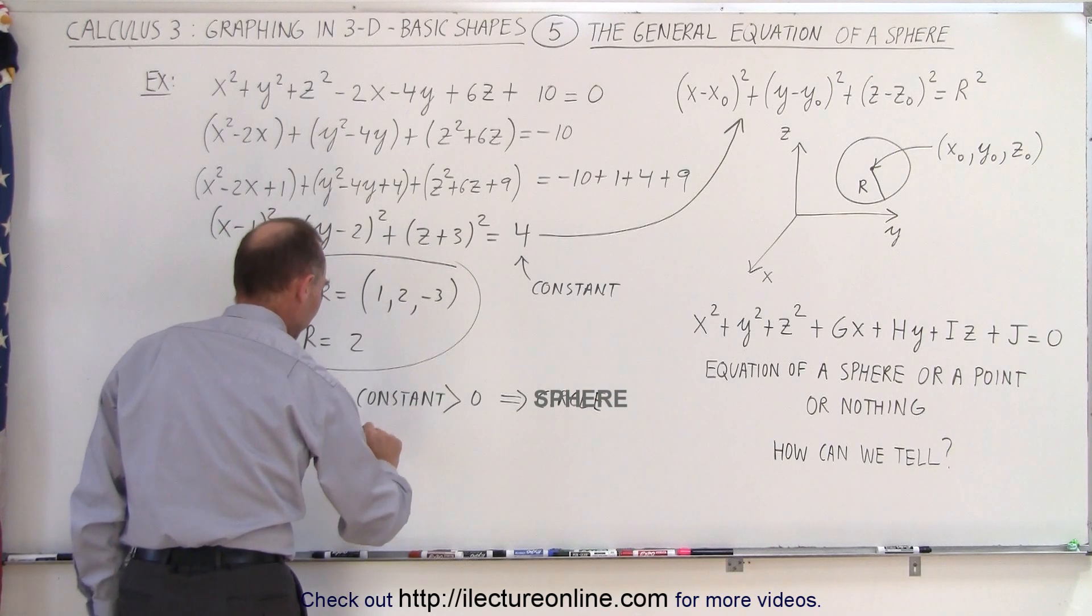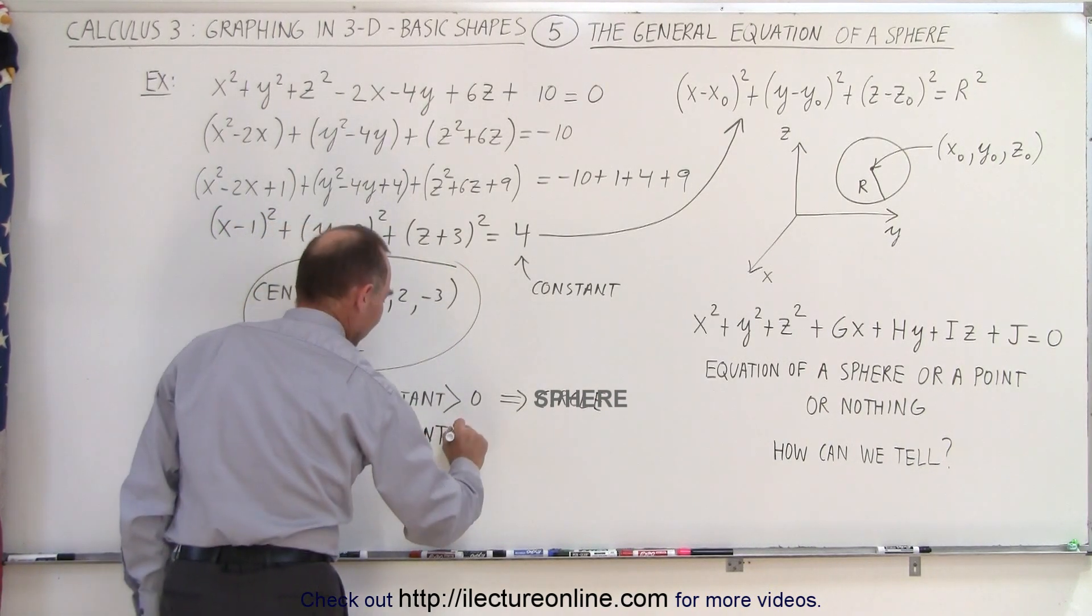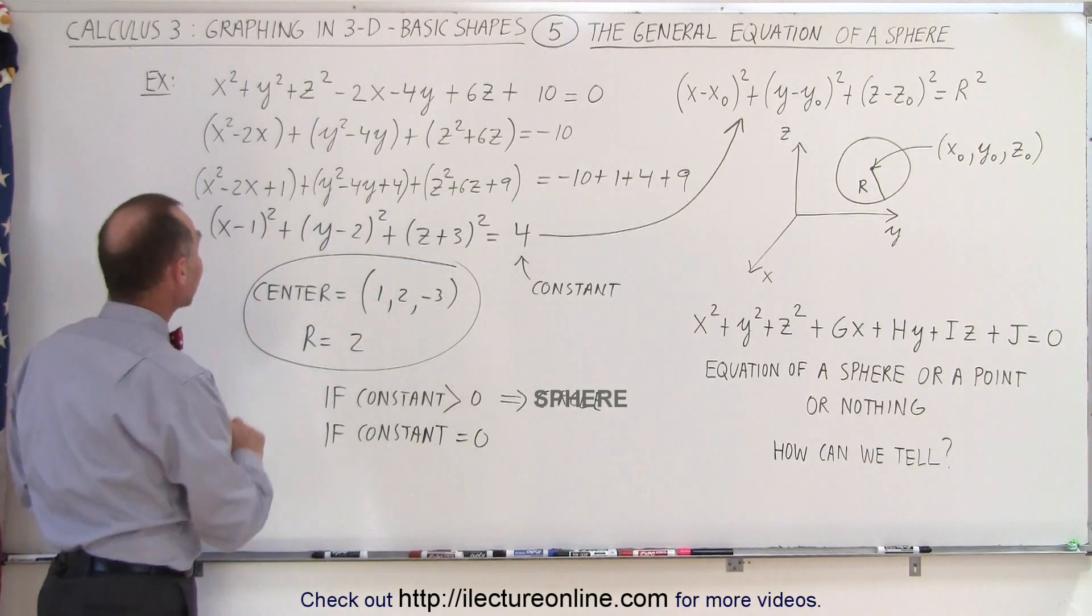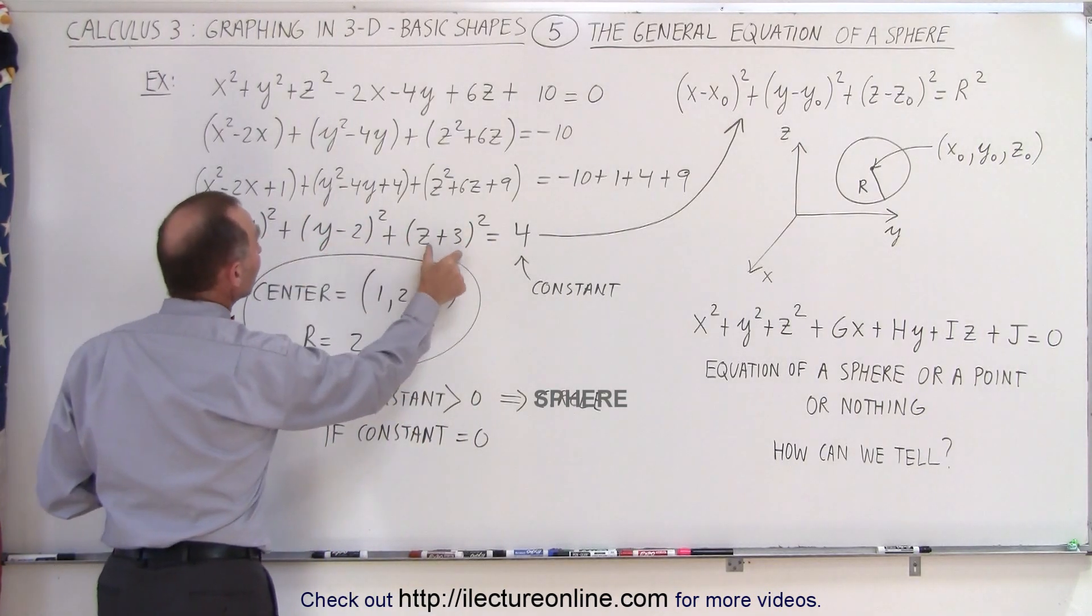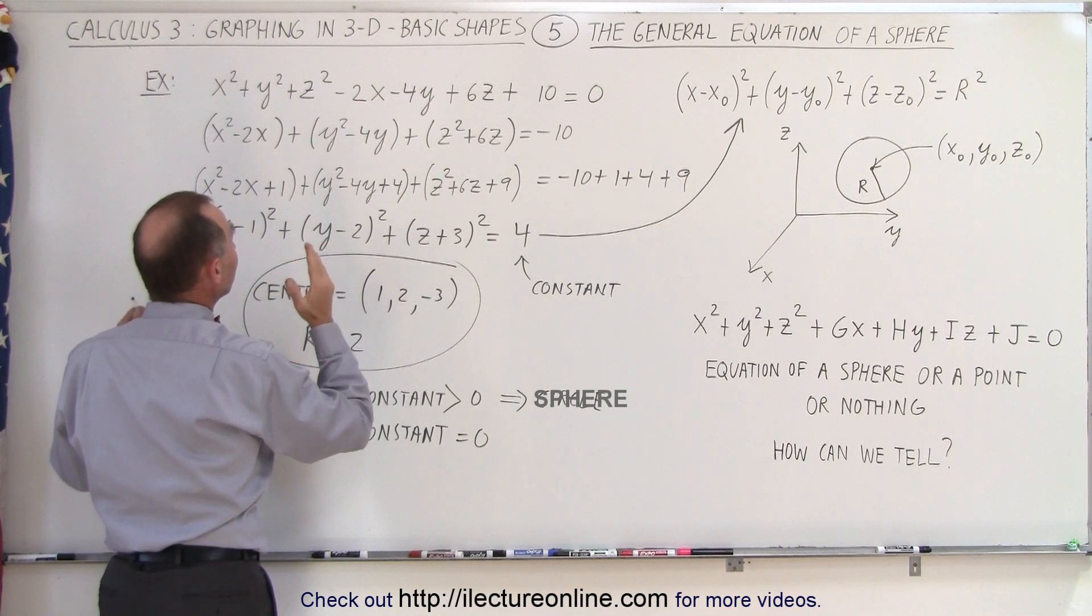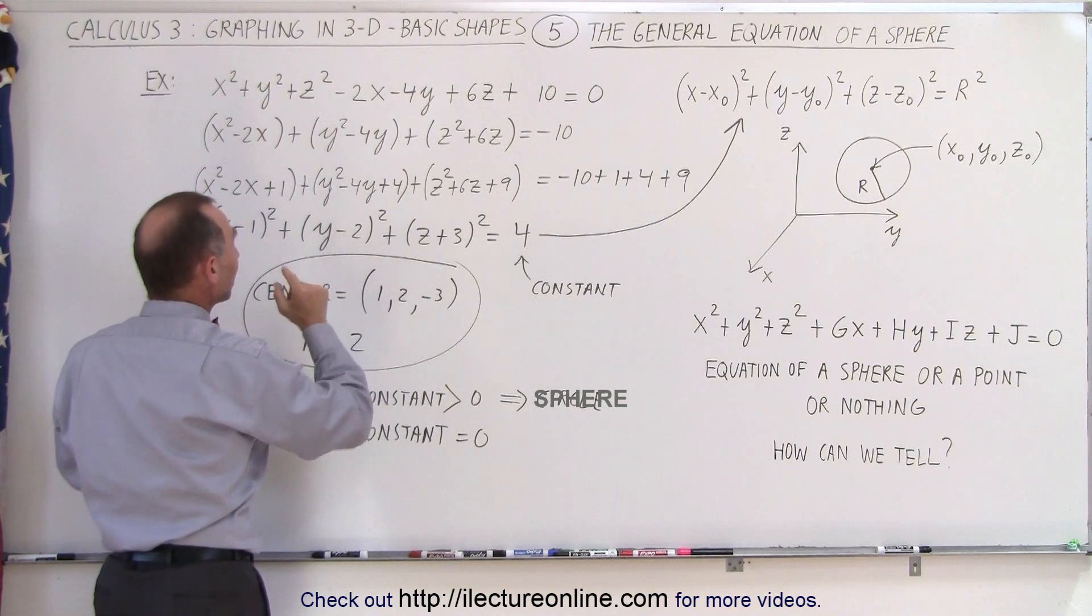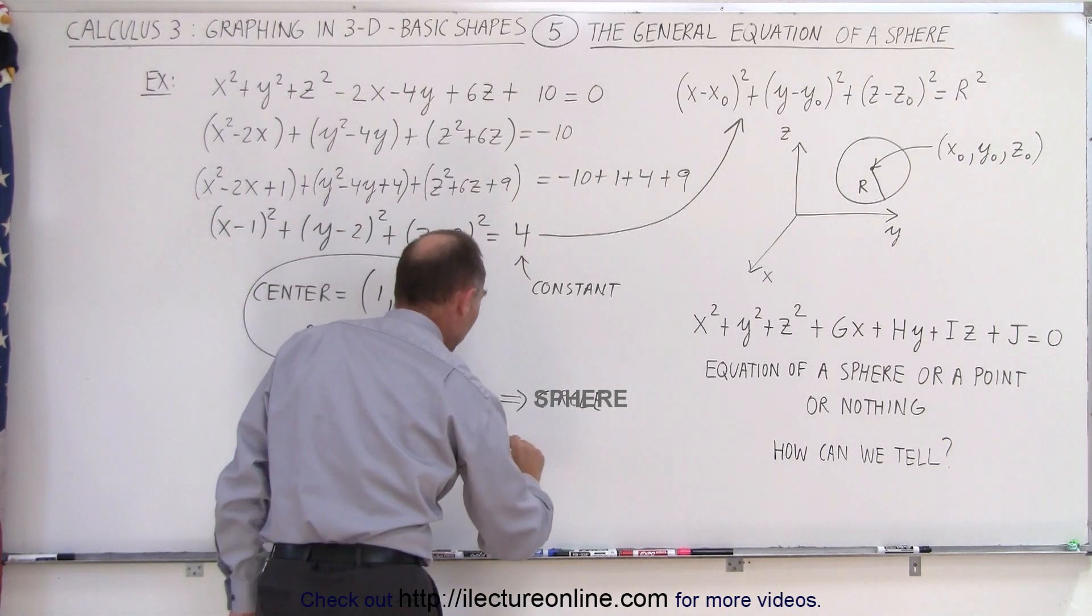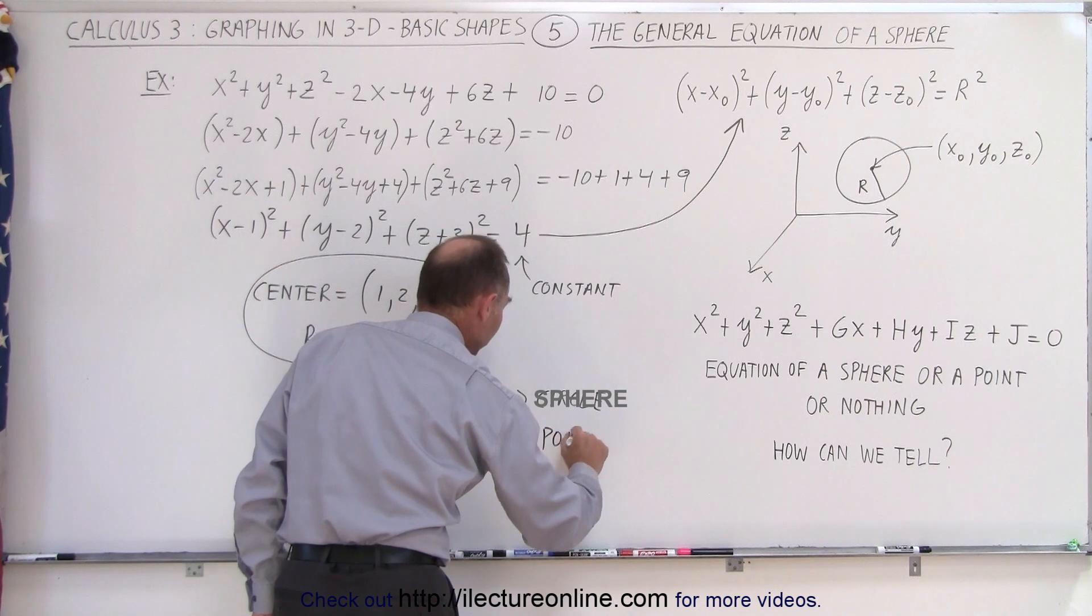But, if the constant is equal to zero, if that is now equal to zero, that means that each of these must be set equal to zero, which means that that will then give us a location exactly at a point, because for this to be equal to zero, x, y, and z could only have one specific combination of values. So that means that now we have an equation of a single point.